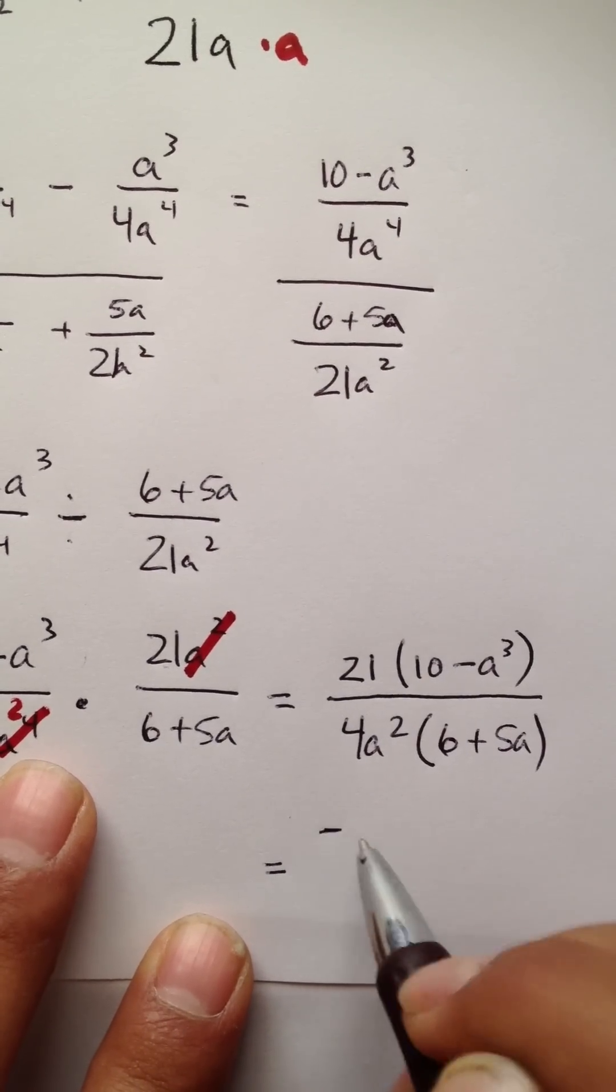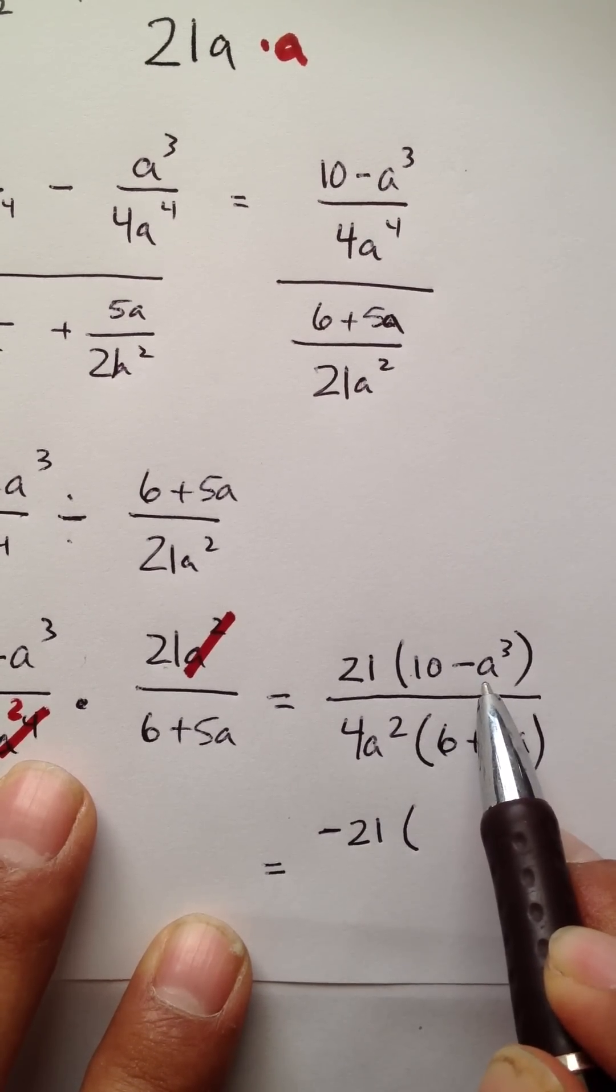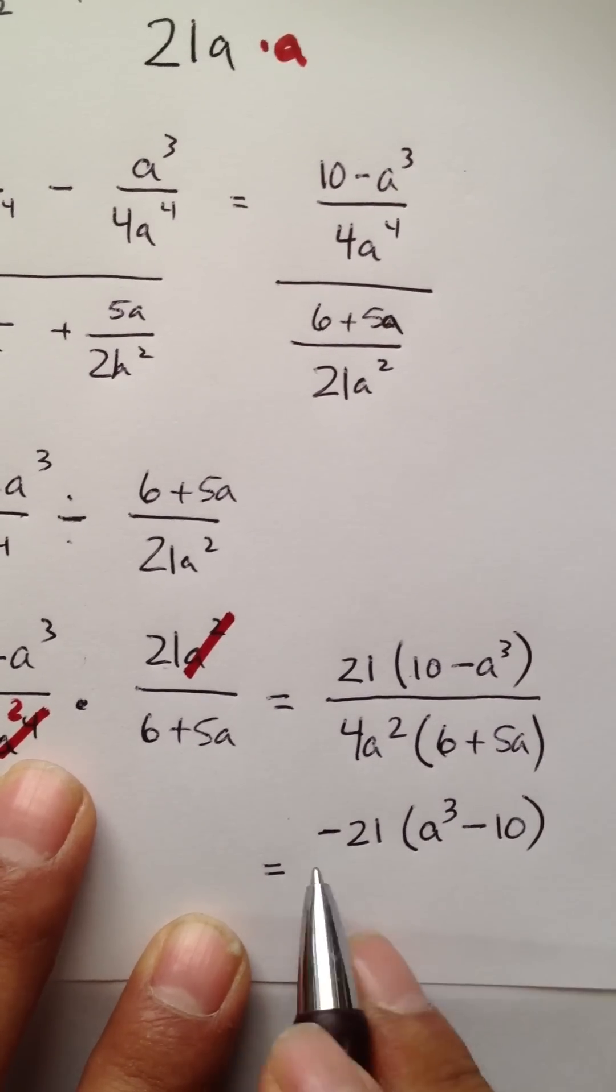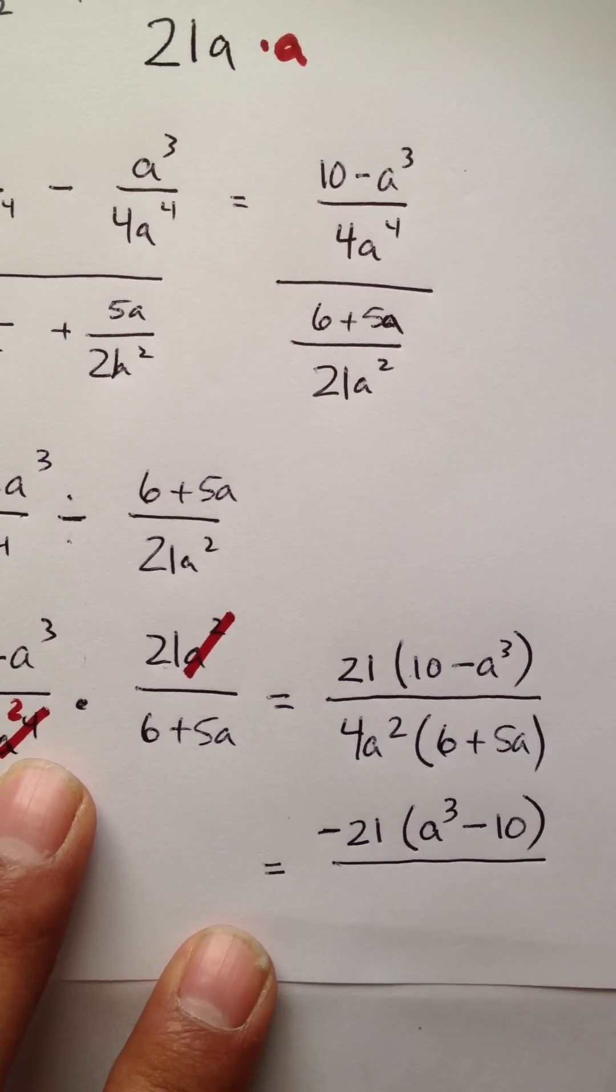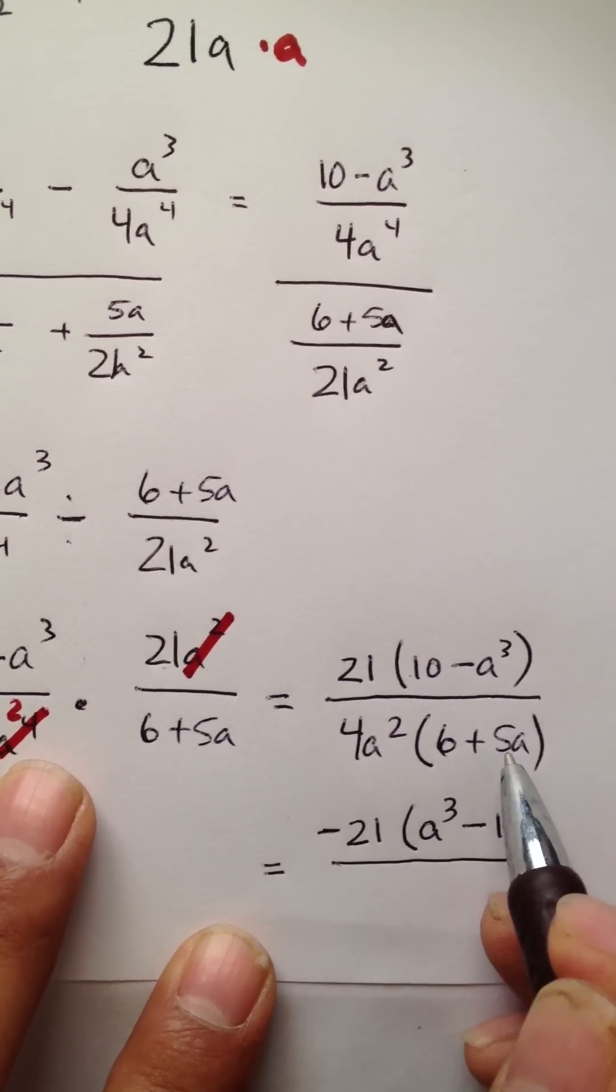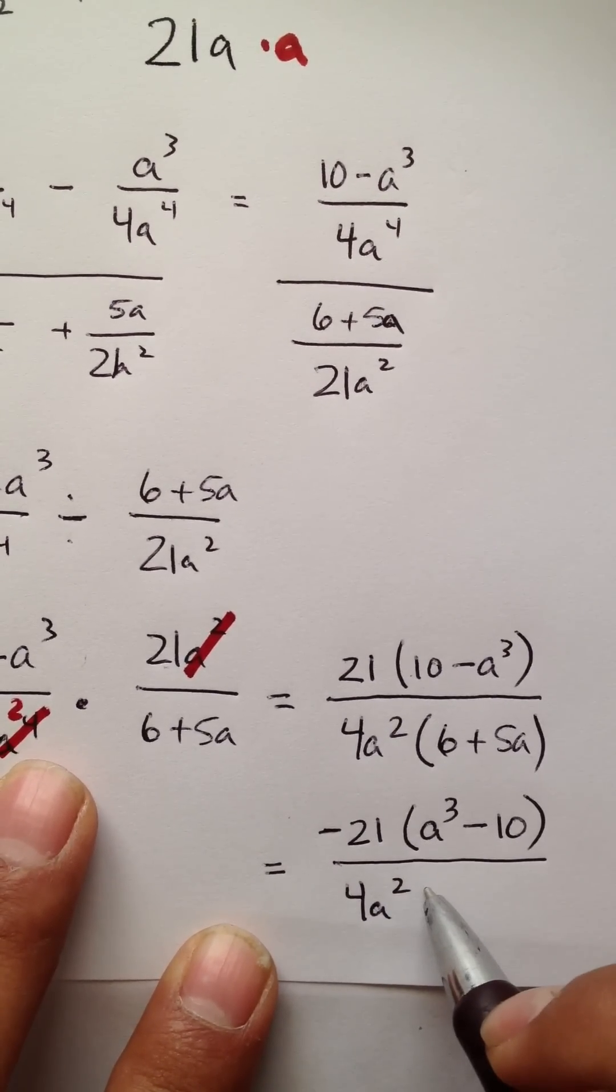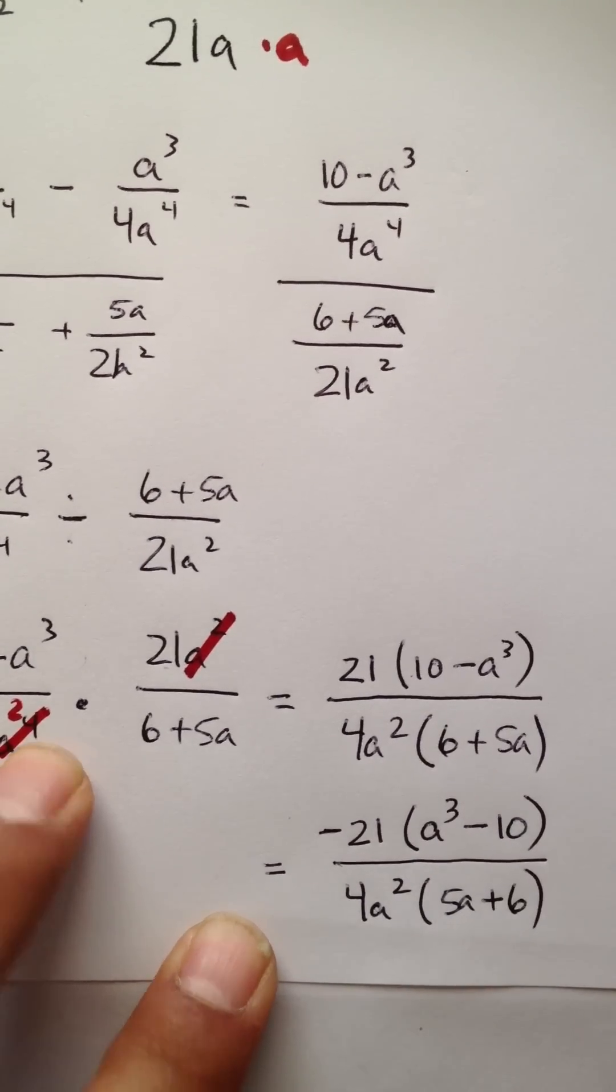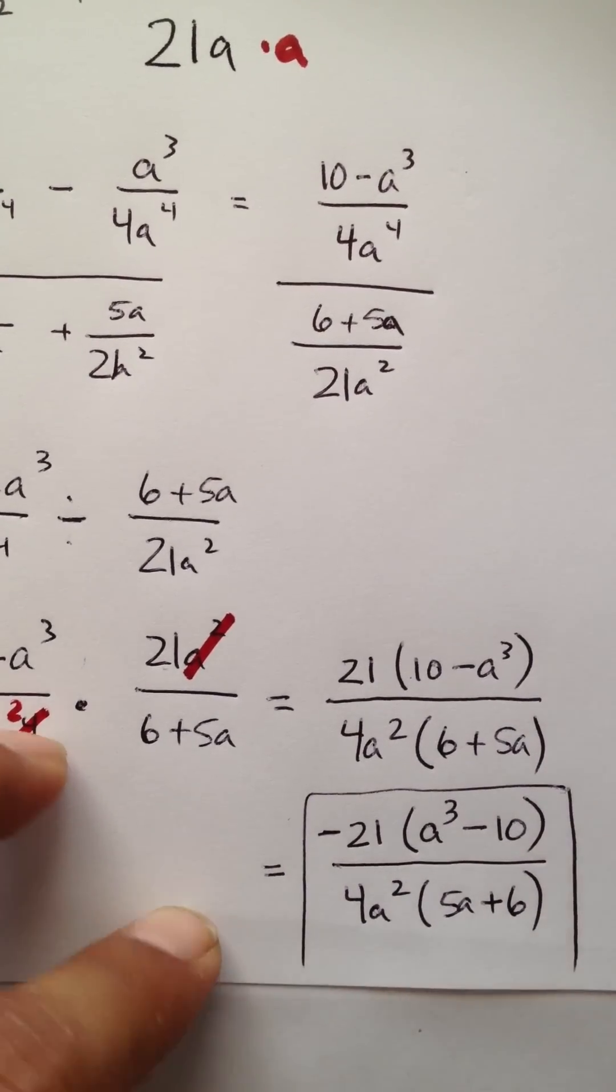Because if you factor out a negative, this will make this negative 10, this will make this positive a to the third power. And so, when you write it, it just looks cleaner this way. This doesn't have to have anything factored out because they're both positive terms. So, you have 4a to the squared power and then you'd have 5a plus 6. This would be the simplified answer. Well, it's not. So, let's go back in...